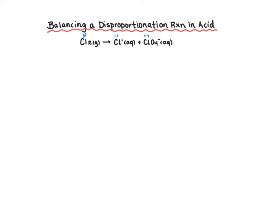Starting with the reduction reaction: Cl2 forms Cl⁻. First, balance elements other than oxygen and hydrogen — we have two chlorines in the reactants and one in the products, so we add a coefficient of two in front of chloride. That gives us balanced elements. Now balance charge: total charge is zero on the reactants and minus two on the products. Electrons are always added to the more positive side, so we add two electrons to the reactants. We now have a balanced reduction half-reaction.